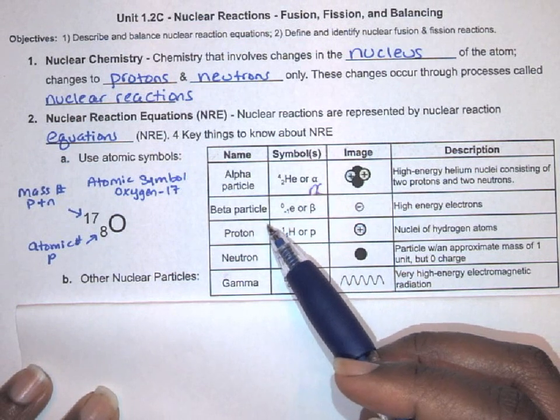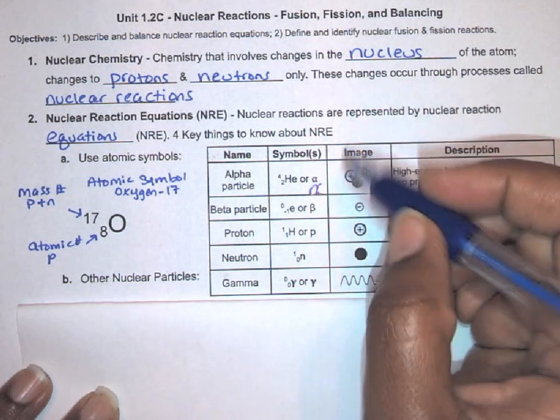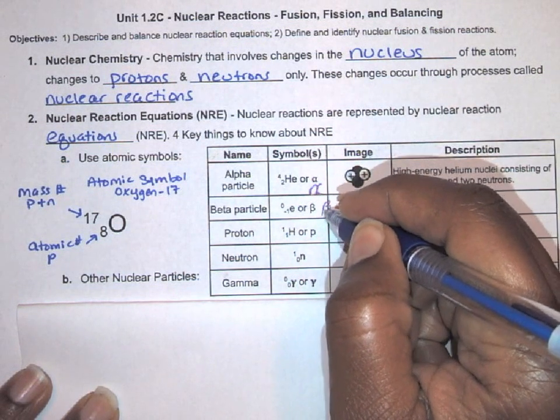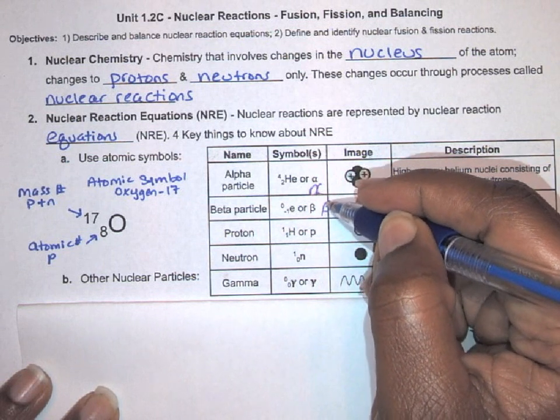For beta particles, since it's a high-energy electron, we can use the electron symbol or we can use a beta symbol, which looks like a B. I'll show you how we draw that—it's like that, just like a B with a longer line going down.